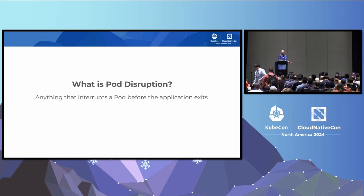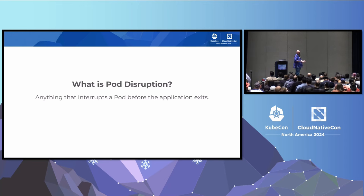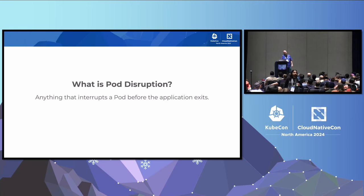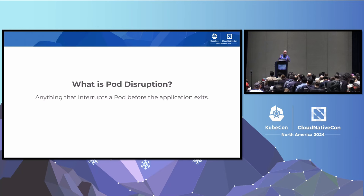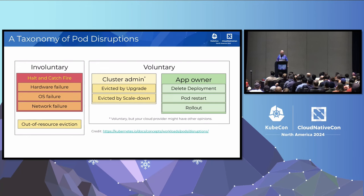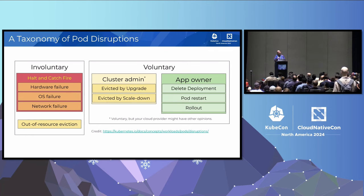So what is pod disruption? Anything that interrupts a pod before the application exits can be considered disruption. That's a super nebulous definition — there are so many things that are actually in this envelope. The Kubernetes documentation even has a taxonomy of these, splitting it up into involuntary and voluntary disruption.